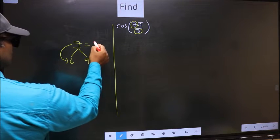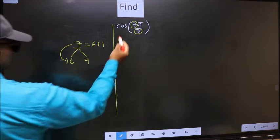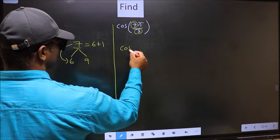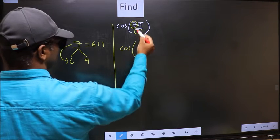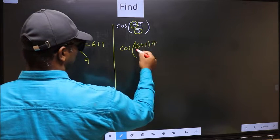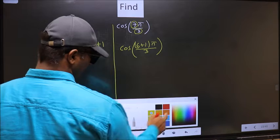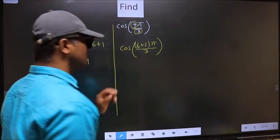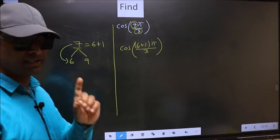So, now 7 should be written as 6 plus 1. So, this will become cos. In place of 7, now you write 6 plus 1, π by 3. This is your step 1.